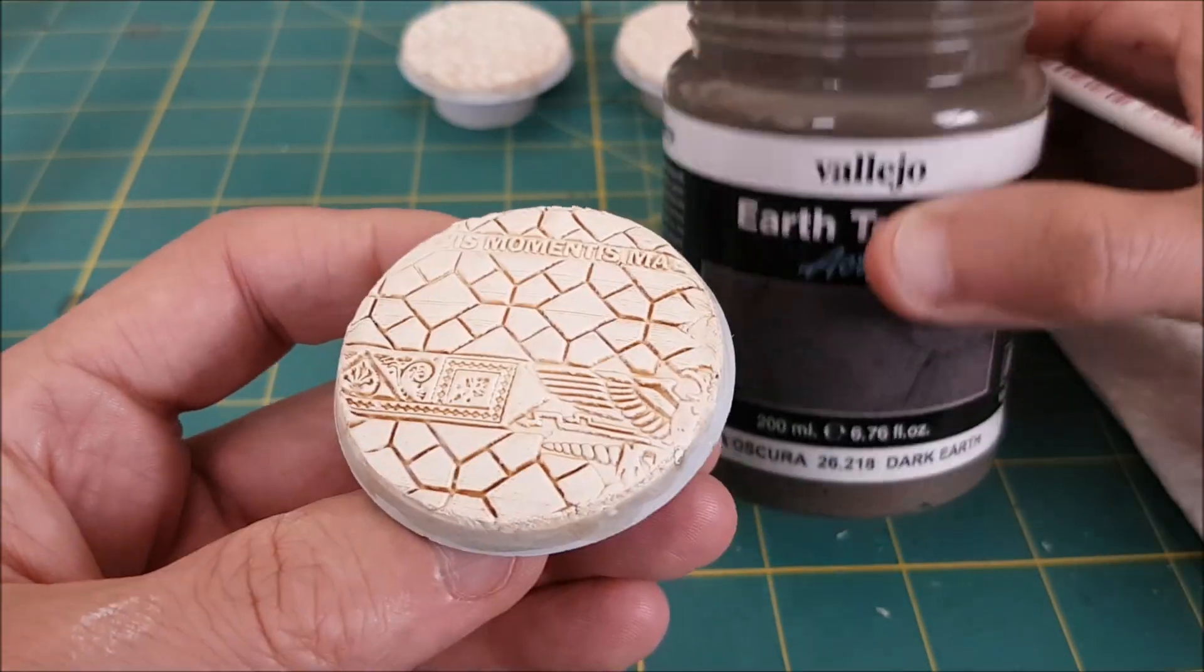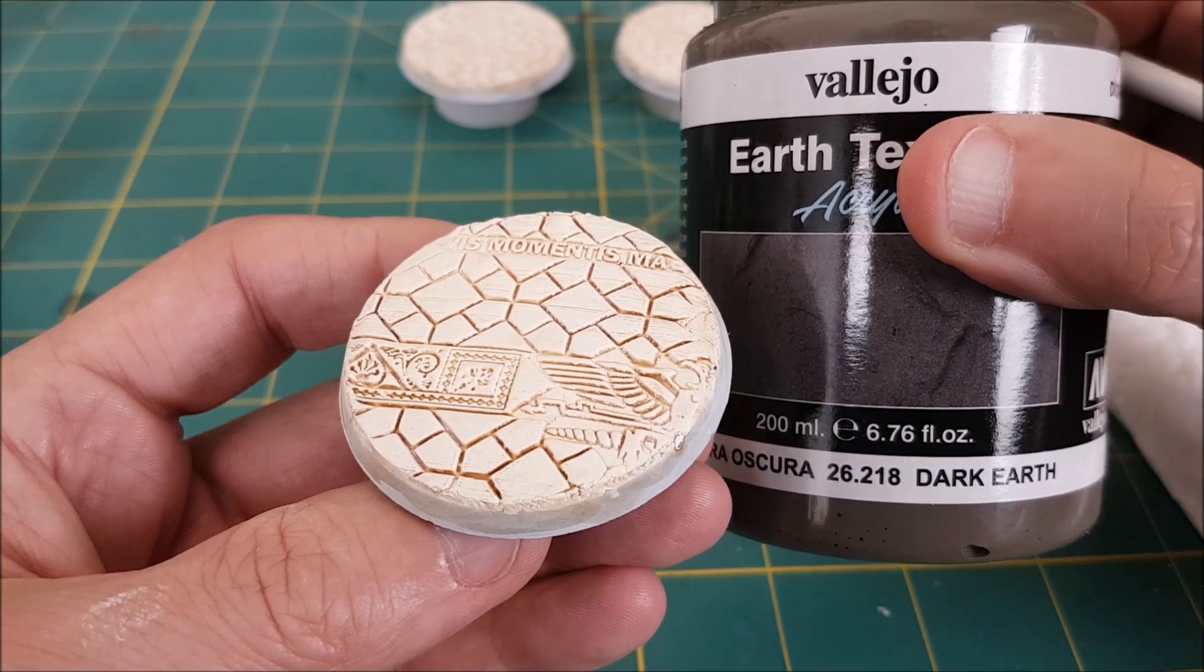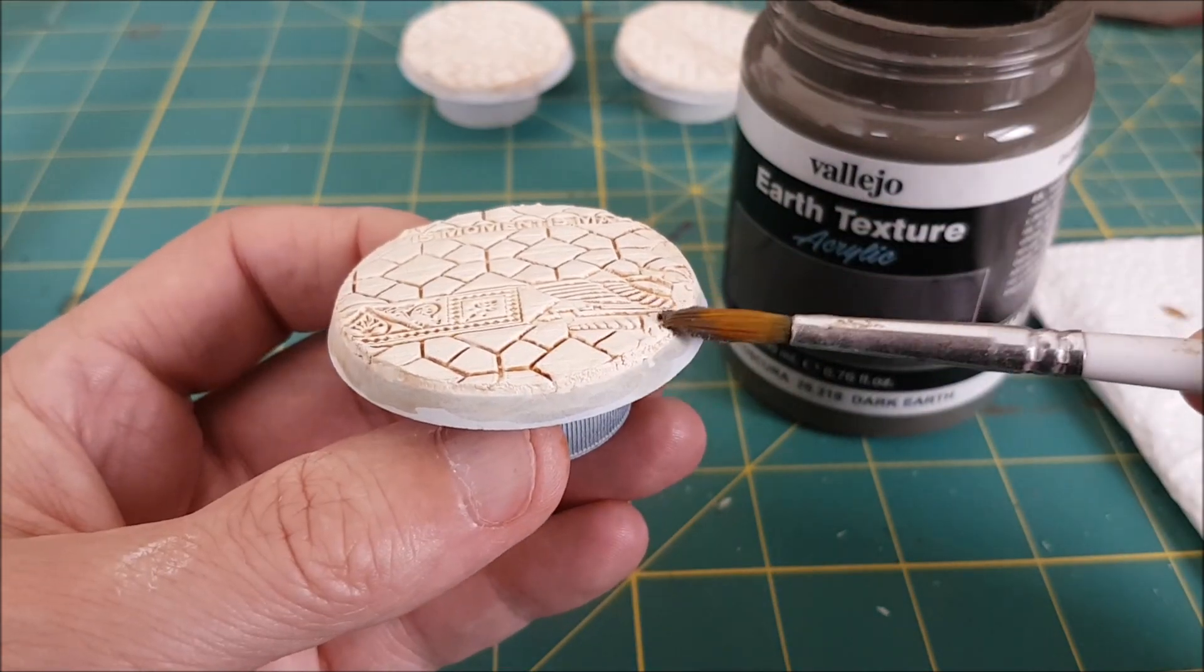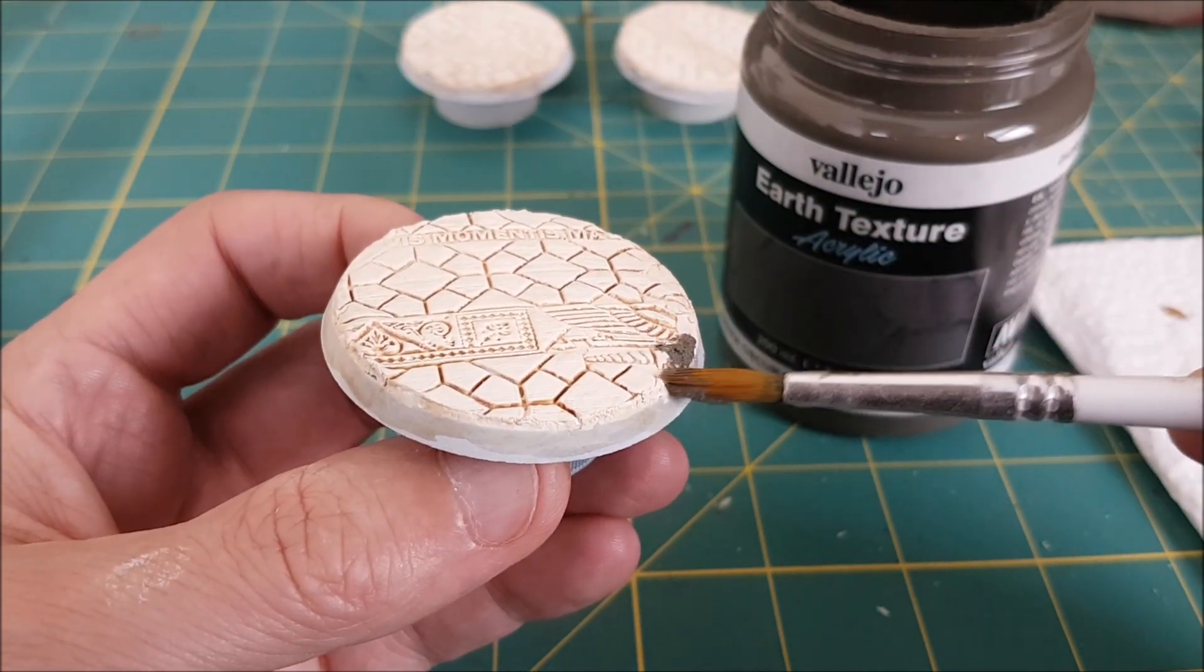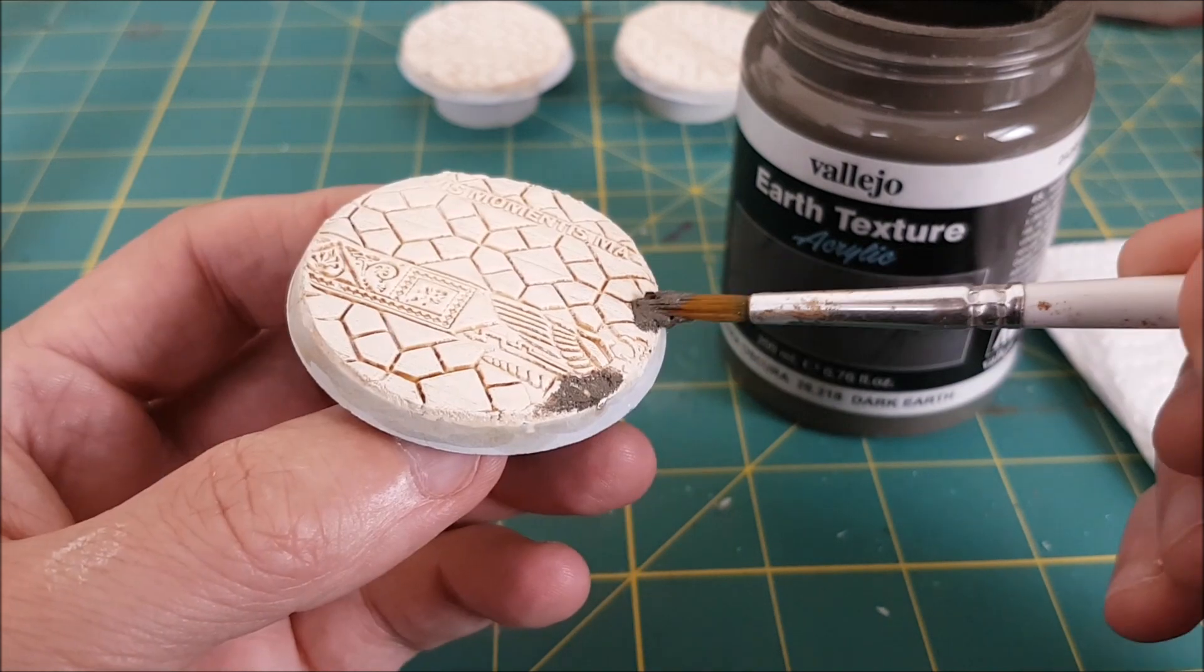Next, I wanted to add a little bit of extra flare to these bases, so I took a little bit of mud texture and I dabbed it around in some random places on the base. This is also a good way to hide any parts where you messed up with the roller.